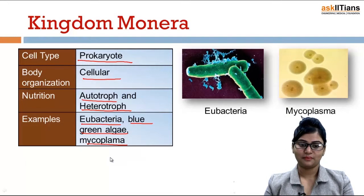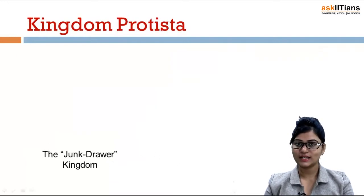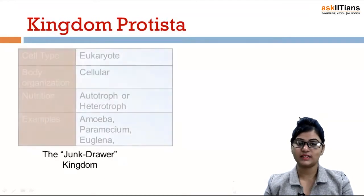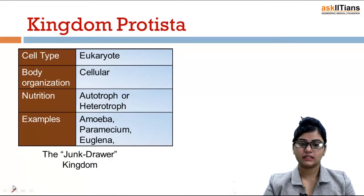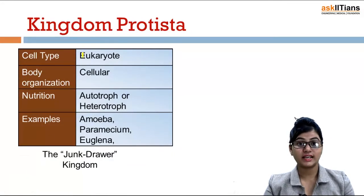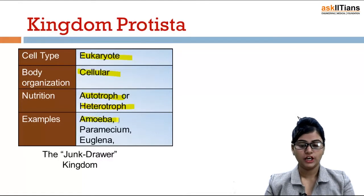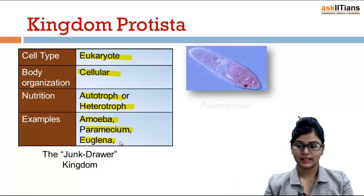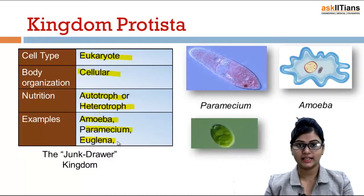Kingdom Protista is also known as the junk drawer kingdom. It has a cell type of eukaryote, body organization is cellular, and nutrition is autotroph or heterotroph. Examples include amoeba, paramecium, and euglena. This is paramecium, this is amoeba, and this one is green algae.